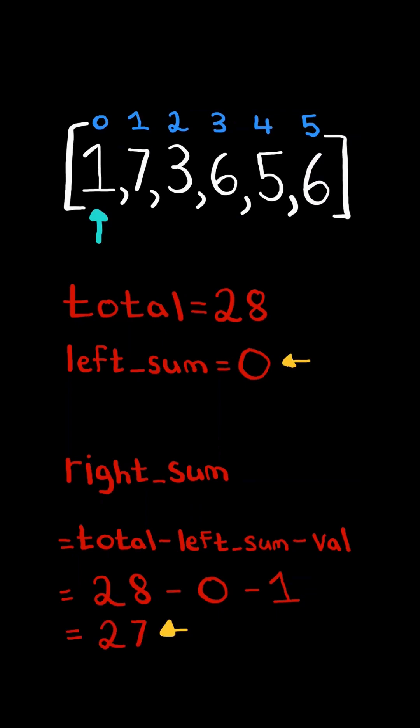Notice the left sum is not equal to the right sum, so we take the current value we are on and add it to left sum, and we continue.